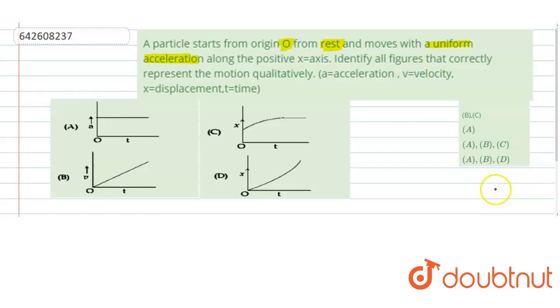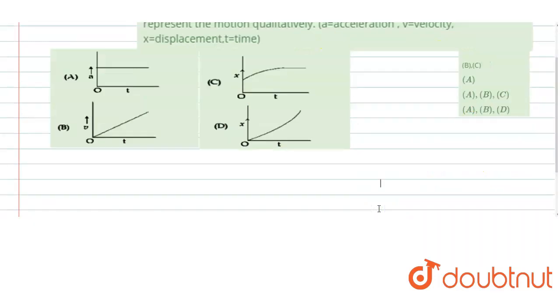Let's understand the concept. Particle is initially placed on the positive x-axis at origin. So let's say at t equals 0, particle is at x equals 0. And what is given to us, it is moving under uniform acceleration along the positive x-axis.